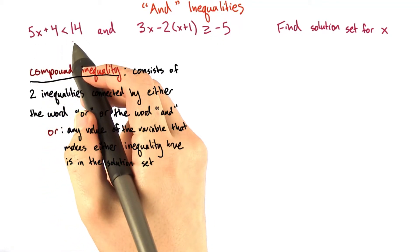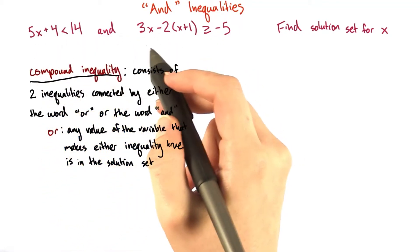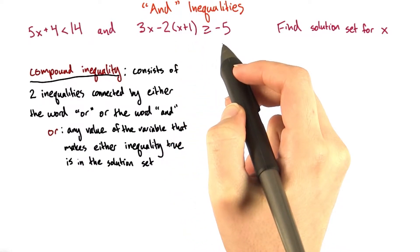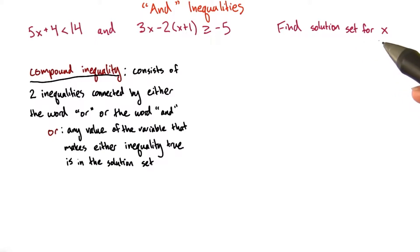Given 5x plus 4 is less than 14 and 3x minus 2 times the quantity x plus 1 is greater than or equal to negative 5, find the solution set for x.